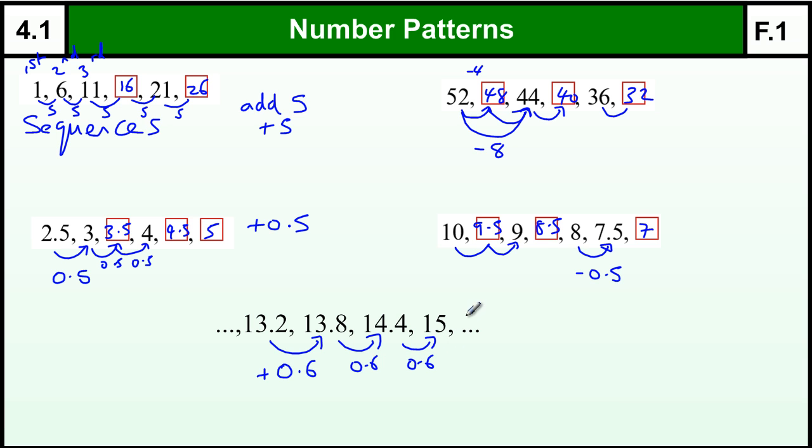If I had to find this number, I'd have to add on 0.6, it would be 15.6, and if I had to do another one, I'd get 16.2. And if I was coming back this way, to get here, I'd have to take off 0.6, because from this number I'd need to add on 0.6 to get the 13.2.